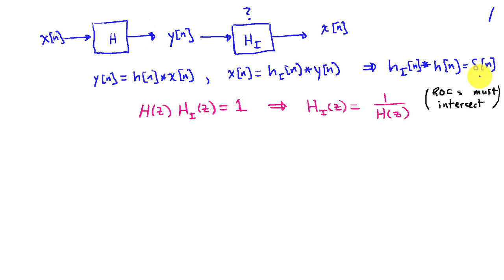If we express this relationship in terms of system functions, this implies that H of z times HI of z must be 1. In other words, HI of z must be the inverse of H of z. Now for this to hold, of course, the ROCs of H of z and HI of z must intersect.